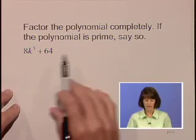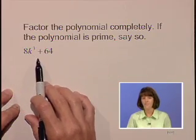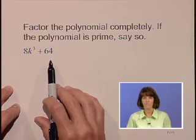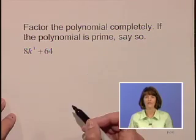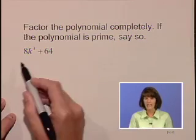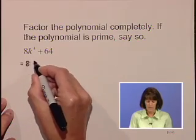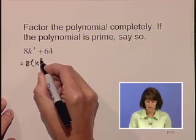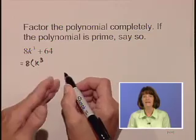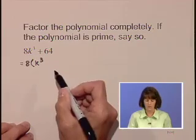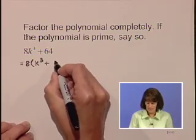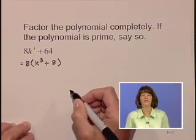Here our polynomial is 8k to the third plus 64. Let's begin by factoring out a greatest common factor. We see that each of these terms has a factor of 8. So let's factor that out to the front. 8 times k to the third is 8k to the third, and 8 times 8 is 64.